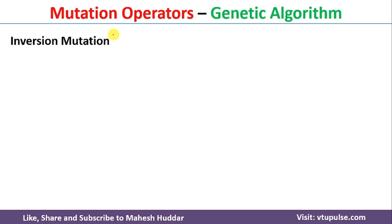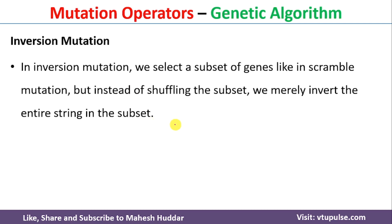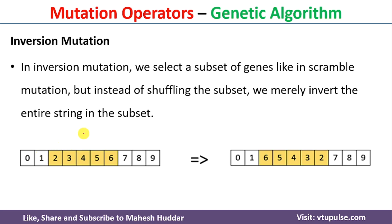The last mutation operator is Inversion mutation. Inversion mutation is somewhat similar to Scramble mutation, but rather than shuffling the subset of genes, we invert the entire selected string. For example, with five genes selected from the chromosome — in Scramble mutation we would randomly shuffle their values, but in Inversion mutation we invert them. If the gene values are 2, 3, 4, 5, 6, after inversion they become 6, 5, 4, 3, 2. That is how the Inversion mutation operator works in genetic algorithm.